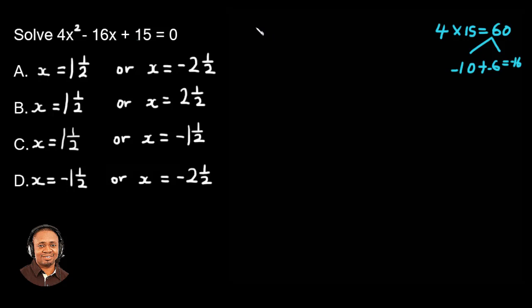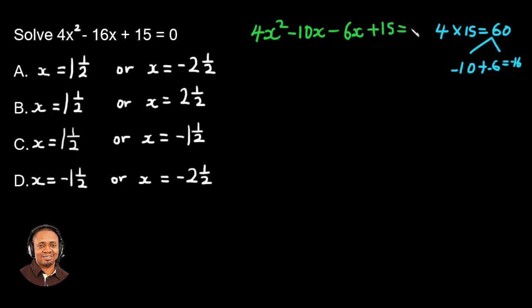So we're going to bring that into the equation. We have 4x squared minus 10x, then minus 6x, then plus 15 equals 0.